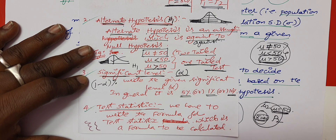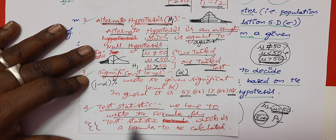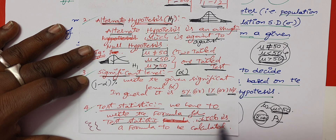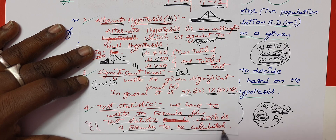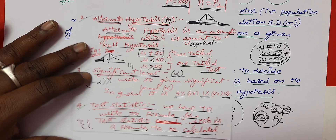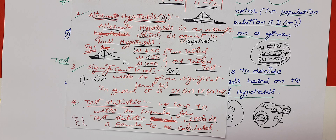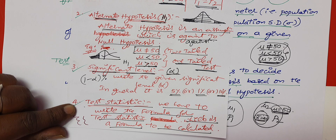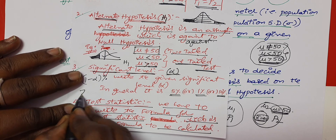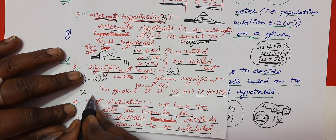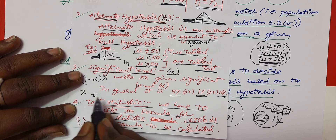Step four is test statistics. This is a very important point. We have to write the formula for test statistics, which is the calculated value. There are different types of tests. For large samples, we use Z. For small samples, we use T. There are two types of tests.